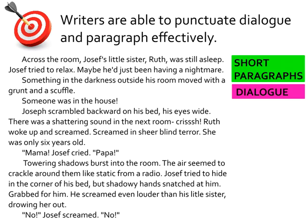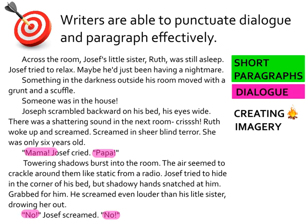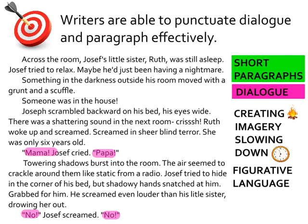We also want to see you using dialogue. Alan Gratz is using dialogue when Joseph screams — "Mama!" Joseph cried. "Papa!" "No!" Joseph screamed. "No!" — we actually hear the character screaming. We also see him using some of the tools you practiced last year: creating heat, creating excitement or anticipation as the excerpt builds. We see him using imagery — he's painting a picture for us. We hear what the character hears, see what the character sees, feel what the character feels. We see him slowing down time and using figurative language. "The air seemed to crackle around them like static from a radio" — that's a simile.